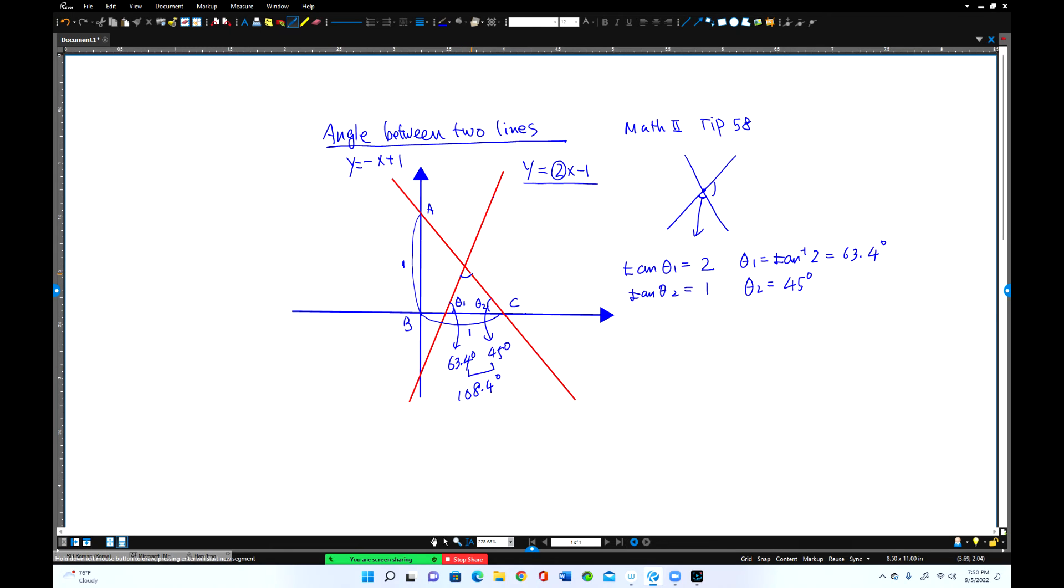So this is the acute angle, right? Because 180 minus 108.4 degrees must be the acute angle. So that is the intersection angle. This is the intersection angle.